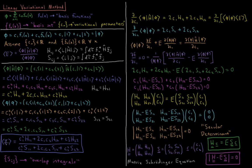For the variational method, we need to differentiate with respect to the coefficients and set that derivative equal to zero. Taking the partial derivative with respect to c1 of the numerator gives 2c1 H11 plus 2c2 H12. Similarly, the partial derivative with respect to c1 of the denominator gives 2c1 S11 plus 2c2 S12.